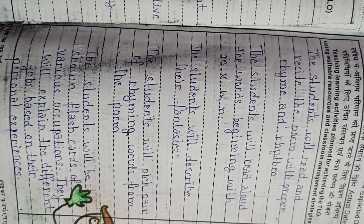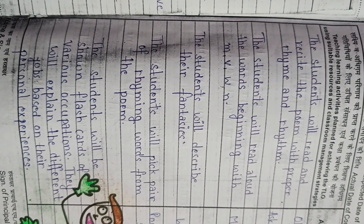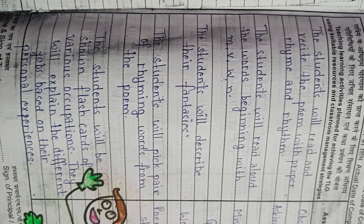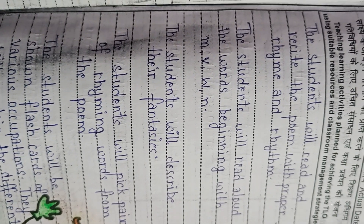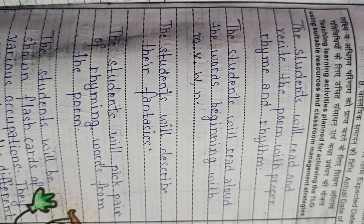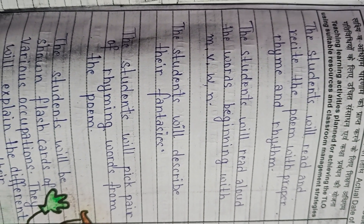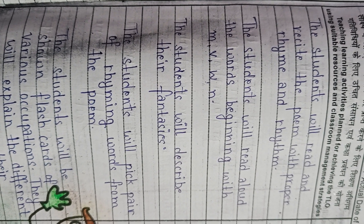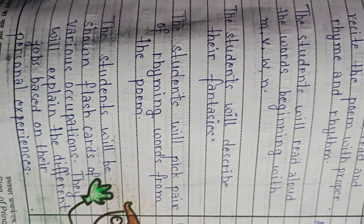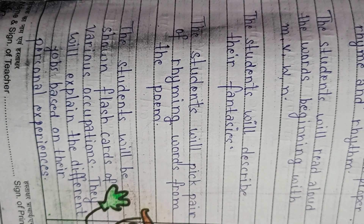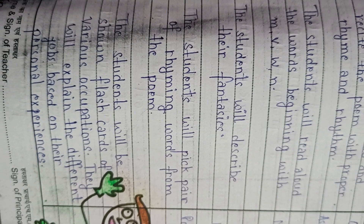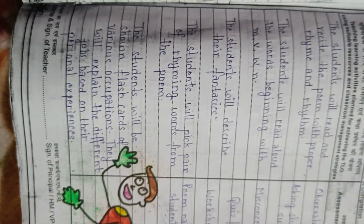Next, there are teaching-learning activities planned. The students will read and recite the poem with proper rhyme and rhythm. The students will read aloud the words beginning with M, V, W, and N. The students will describe their fantasies. The students will pick pairs of rhyming words from the poem. The students will be shown flashcards of various occupations and will explain the different jobs based on their personal experiences.